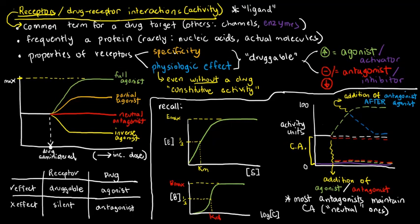There are very rare cases wherein we have drug targets that are nucleic acids or actual chemical compounds, but we will not talk about those rare cases here. Now, since we do have receptors primarily as proteins, do note that there are two main properties that we should always find in receptors. Those are, one, specificity, and two, the capability to elicit a physiologic effect.